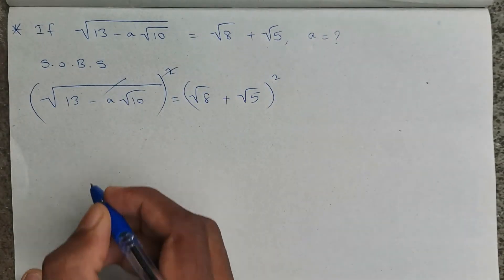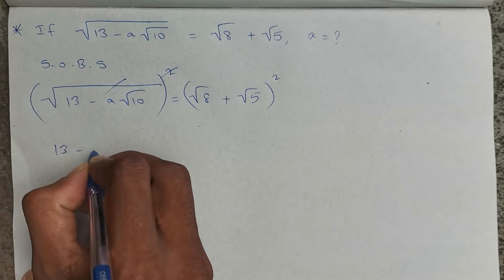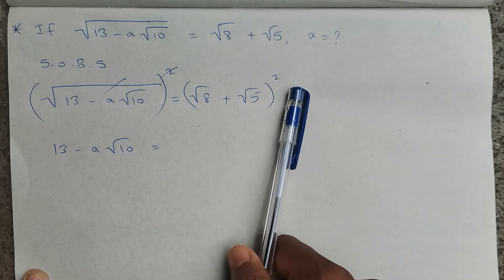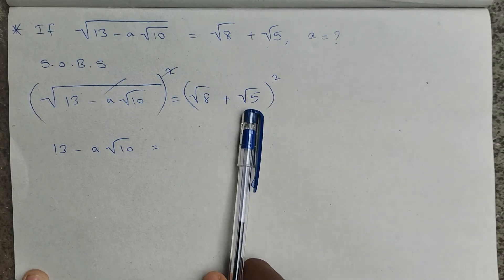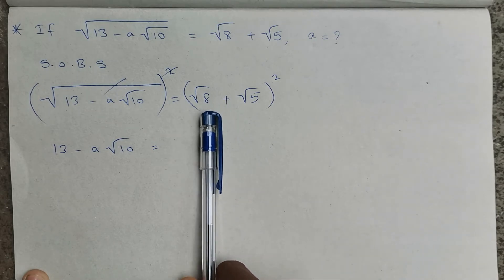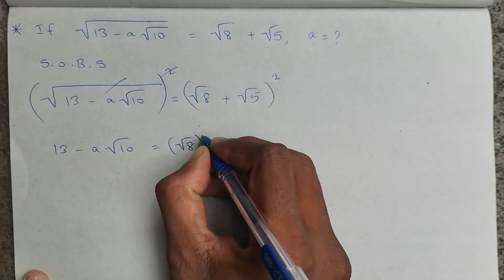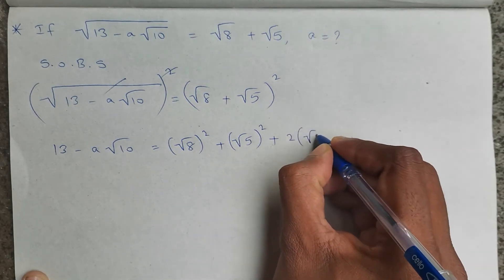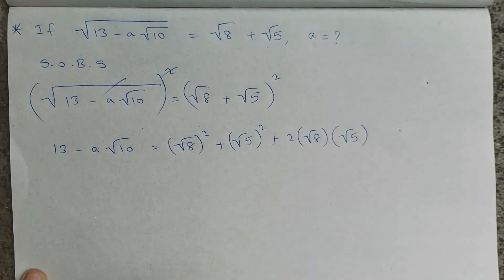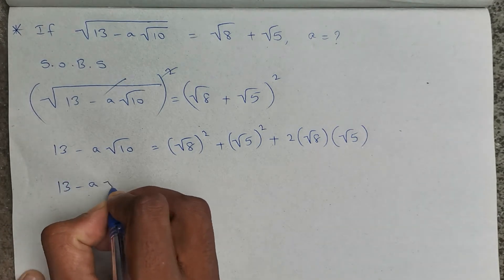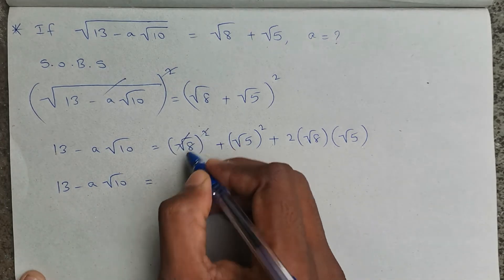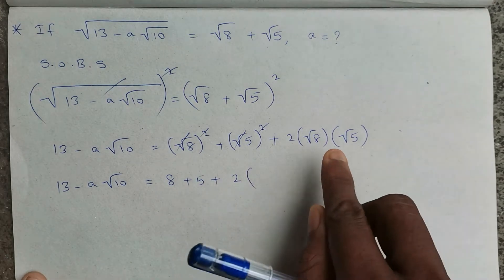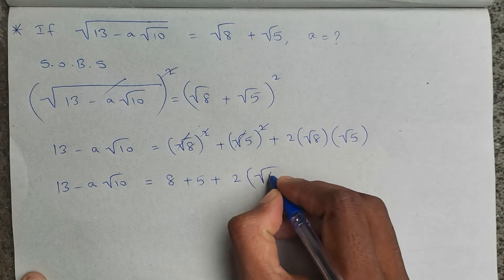The square root and square will get cancelled, so we remain with 13 − a√10 on the left. The right-hand side is in the form of (a + b)², where a is √8 and b is √5. Expanding: a² + b² + 2ab gives (√8)² + (√5)² + 2·√8·√5, which is 8 + 5 + 2·√8·√5 = 8 + 5 + 2√40.